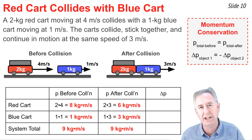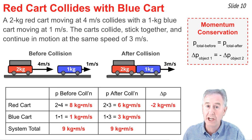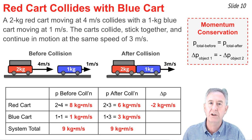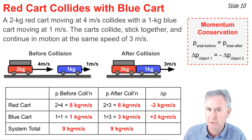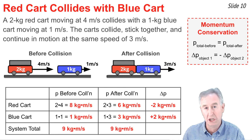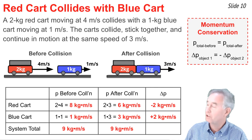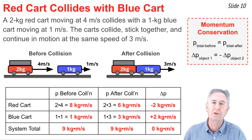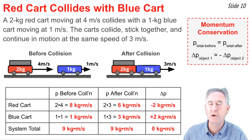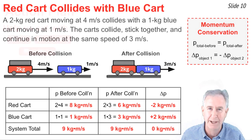Looking at the changes: for the red cart, the change is from 8 to 6 — that's negative 2. For the blue cart, the change is from 1 to 3 — that's positive 2. The change of the red cart is equal and opposite to the change of the blue cart; one gains and the other loses. But for the system, adding negative 2 and positive 2 gives a change of 0. The total momentum of the system did not change — it was conserved. That's what we call the law of momentum conservation.